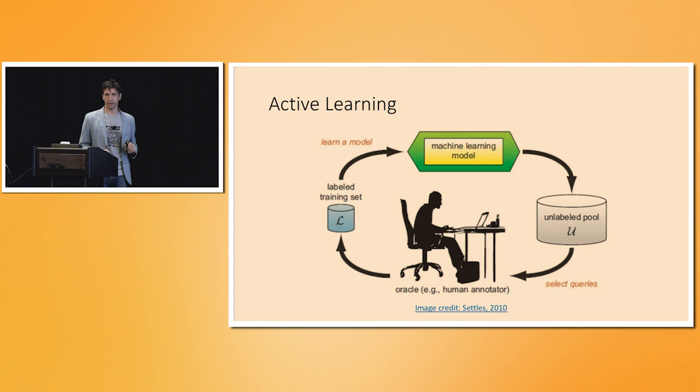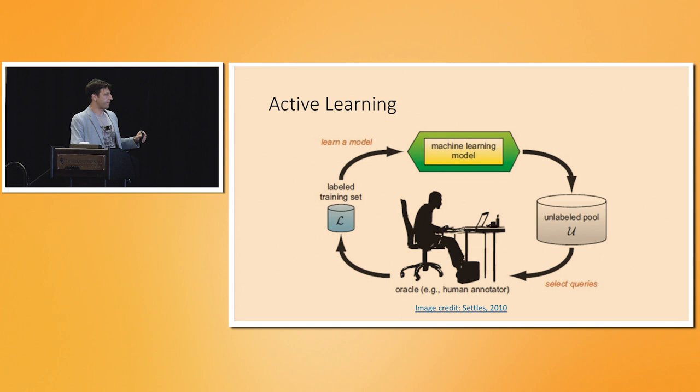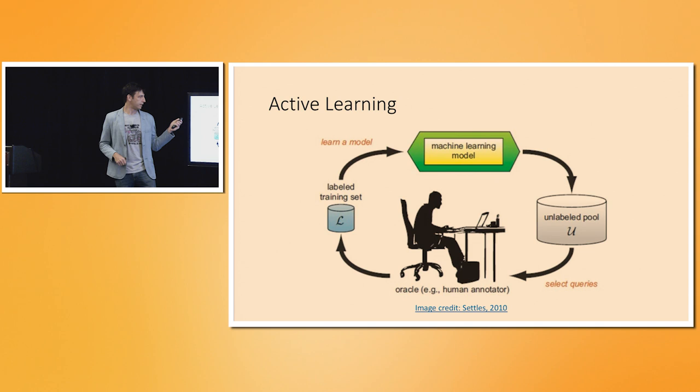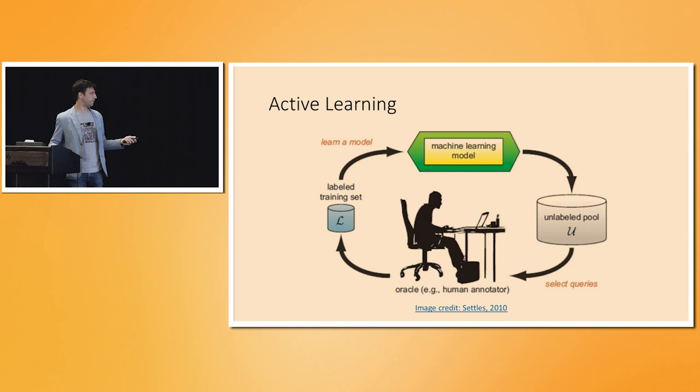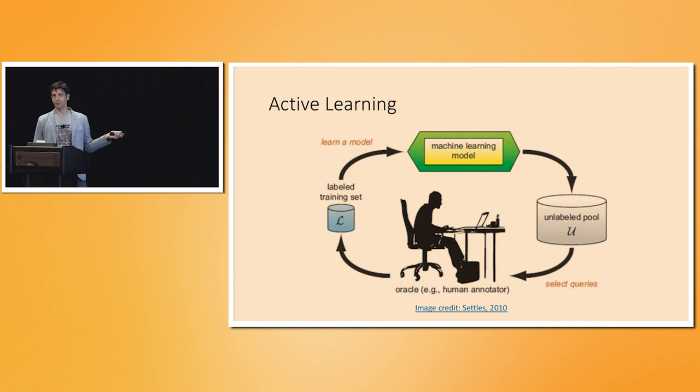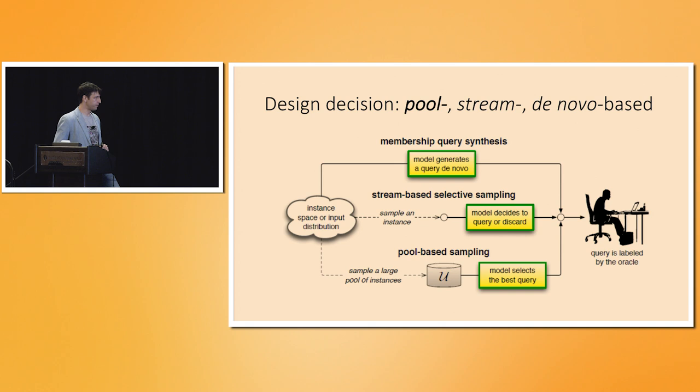The basic setup for active learning is a loop: we have a huge amount of unlabeled data and a human annotator. We go through rounds — we choose some examples as queries, send them to the annotator, get a label, add it to the labeled subset, train our model, then given the updated model, choose new examples to annotate. This is called pool-based active learning, and it's easy to simulate by taking a dataset and withholding the labels.